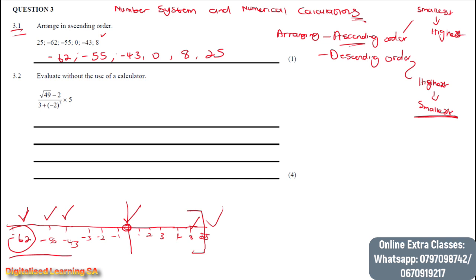Now let's move to question 3.2, which says evaluate without the use of a calculator. This is very easy — we just need to get rid of the square root first. The square root of 49 is 7, so we will have 7 minus 2, divided by 3. We know that 2 to the power of 3 equals 8, so we will have negative 8. Positive and negative gives us negative, that's why we have negative 8. Then 7 minus 2 equals 5, and 3 minus 8 equals negative 5, multiplied by 5.